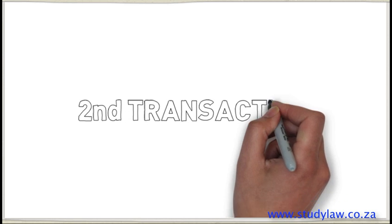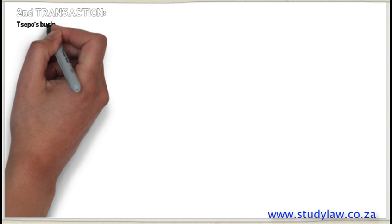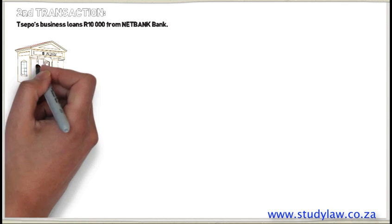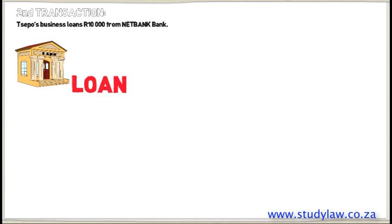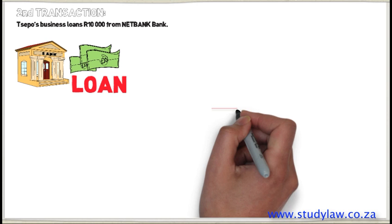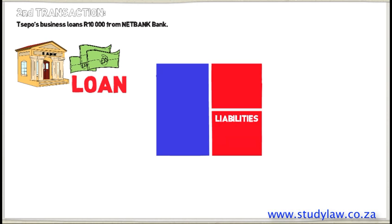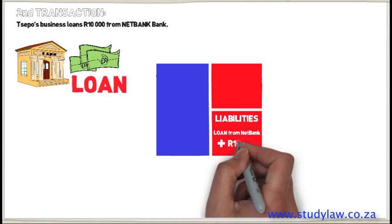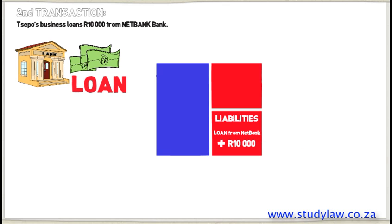The second transaction is when Seppo's business loans R10,000 from NetBank. When Seppo gets the money from NetBank, he is loaning that money, which means he owes NetBank and must pay them back. This is a type of liability account, recorded under the account name Loan. The second account affected will be Bank, because when Seppo's company gets the money from NetBank, his company stores it in its own bank account.